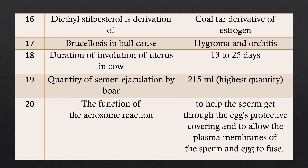Question 19: Quantity of semen ejaculated by a boar? The boar's semen ejaculation is the highest in quantity. Answer: 215 ml, the highest among domestic animals. Question 20: The function of the acrosome reaction. The acrosome is a cap-like structure on the sperm head. Answer: This reaction helps the sperm to get through the egg's protective covering, making sperm entry into the egg possible and allowing the plasma membrane of sperm and egg to fuse.